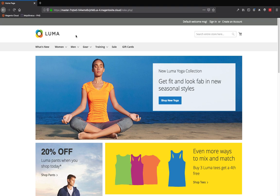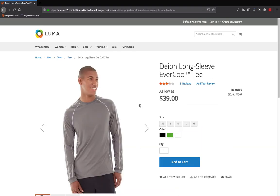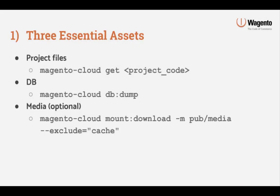In order to simulate a project that's already in progress, I've installed the sample data in a cloud environment. This sample data populates a vanilla Magento install with a few content pages and several products, so we'll know we've succeeded when we can see these products in the local environment. The three essential project assets you'll need to get a project running locally are: the project files or repository, the database, and the media for the project including product images and such.